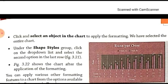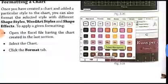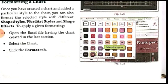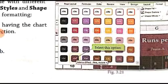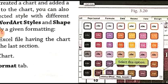When you click on the Shape Styles button, a drop-down list will open. As shown in figure 3.21, various types of shape styles are given in this drop-down list. You have to select any one particular style from the options available — it is not fixed. You can choose any style as per your choice, convenience, and requirement.